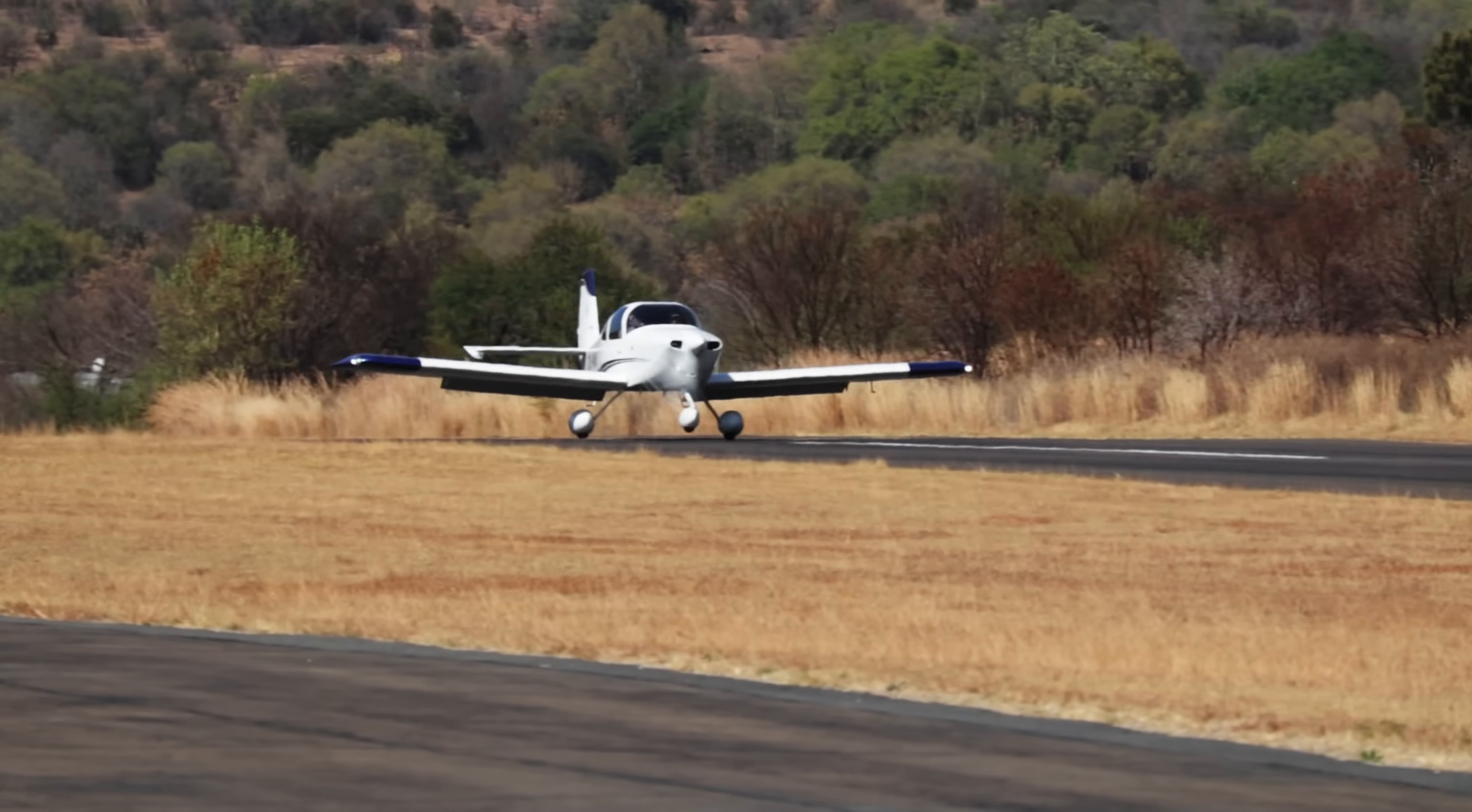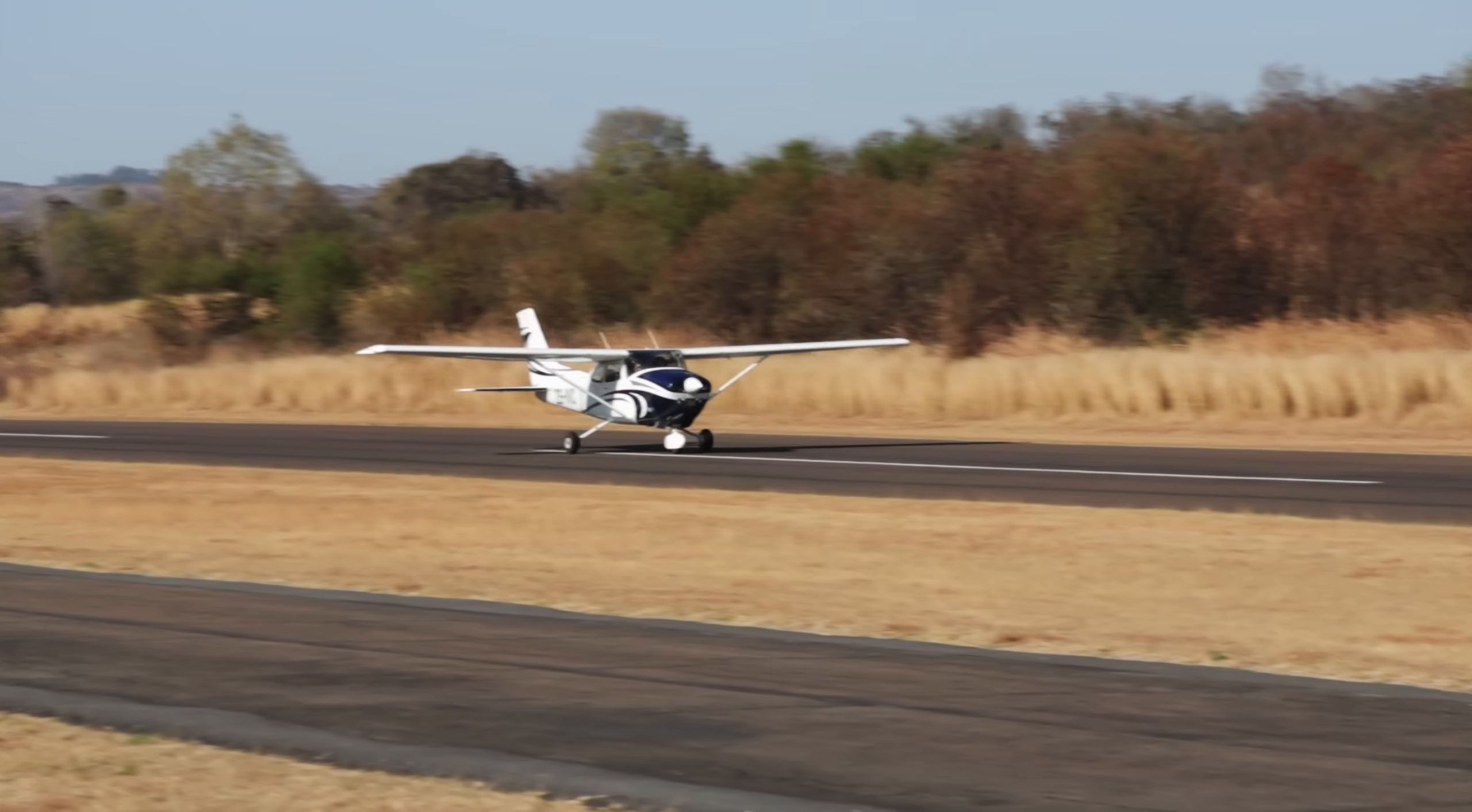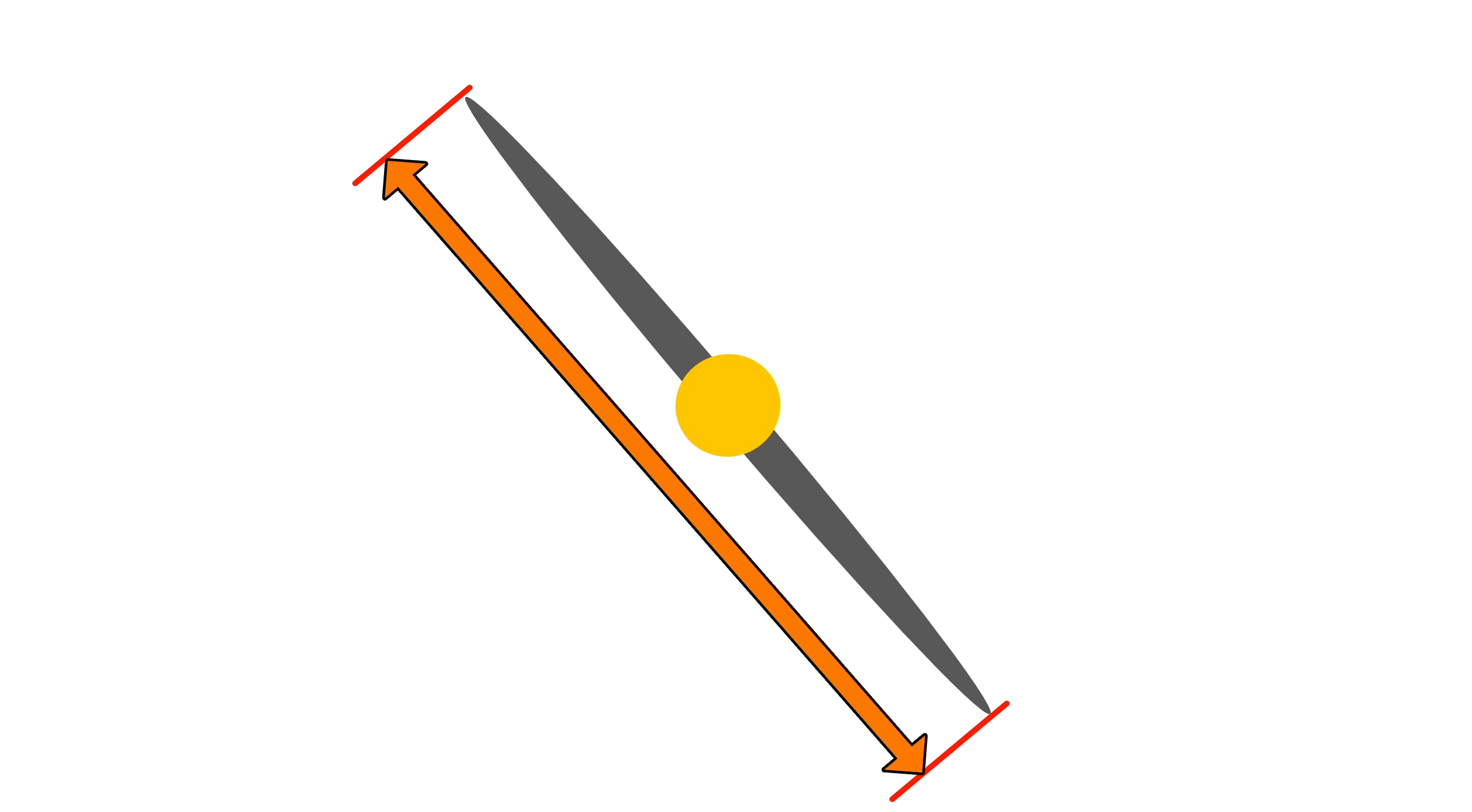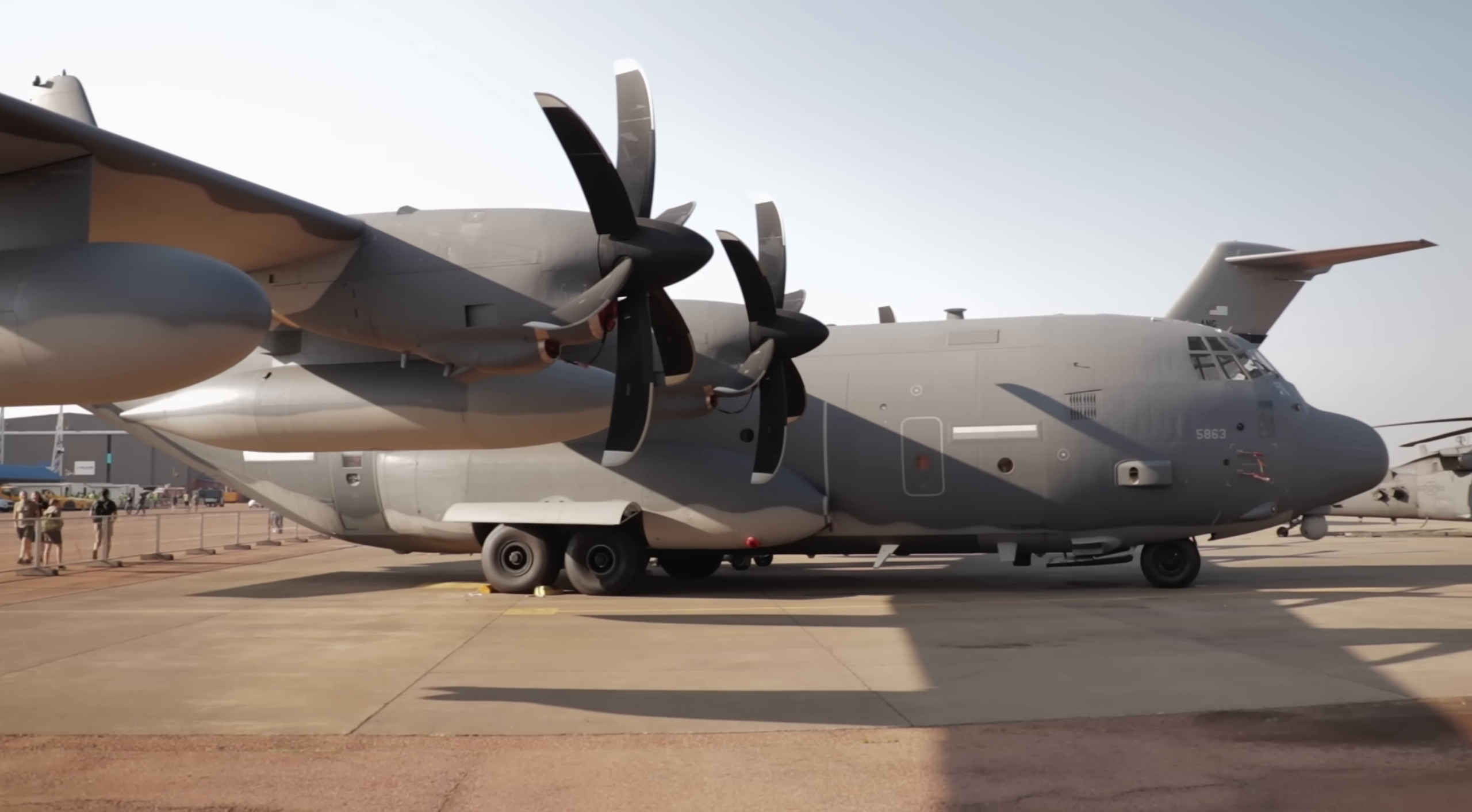But due to limited ground clearance and the need to keep blade tips below about Mach 0.8 to avoid compressibility problems and keep noise levels low, propeller diameter is limited. In order to create enough thrust without spinning a propeller faster, the number of blades needs to increase. This is why more powerful propeller engines have larger multi-blade props.